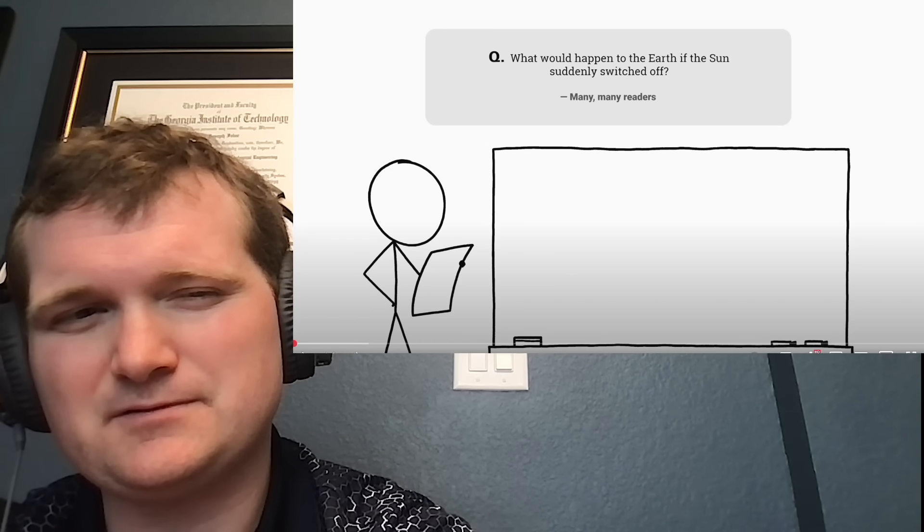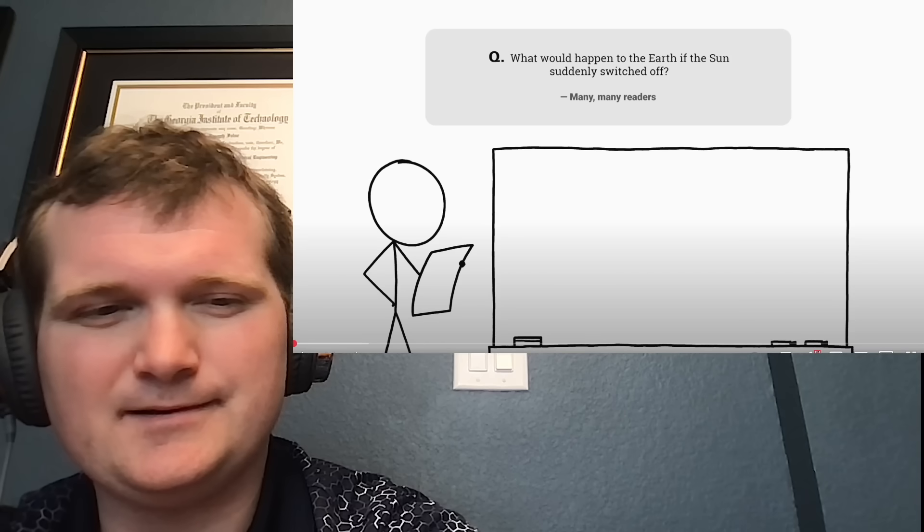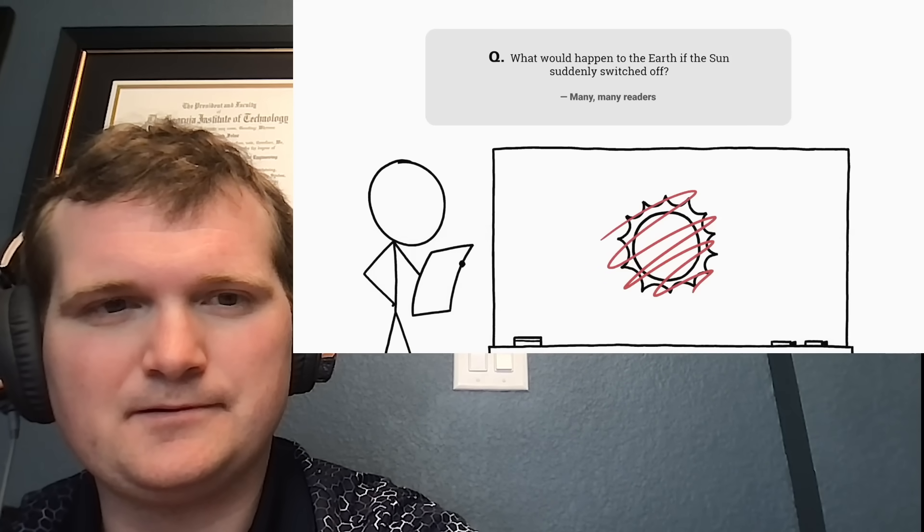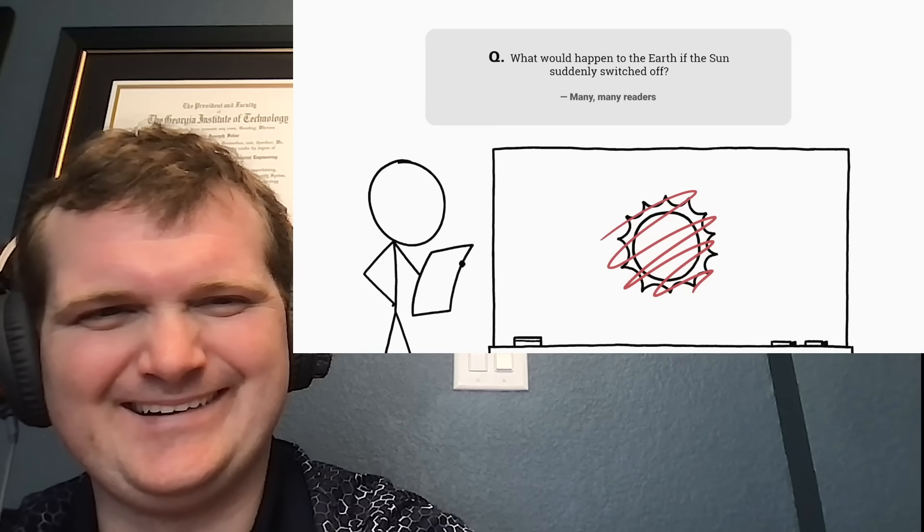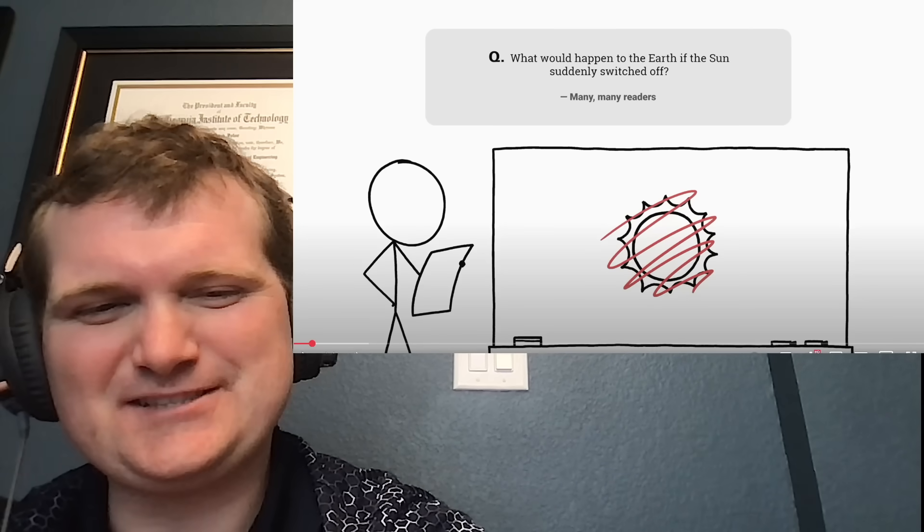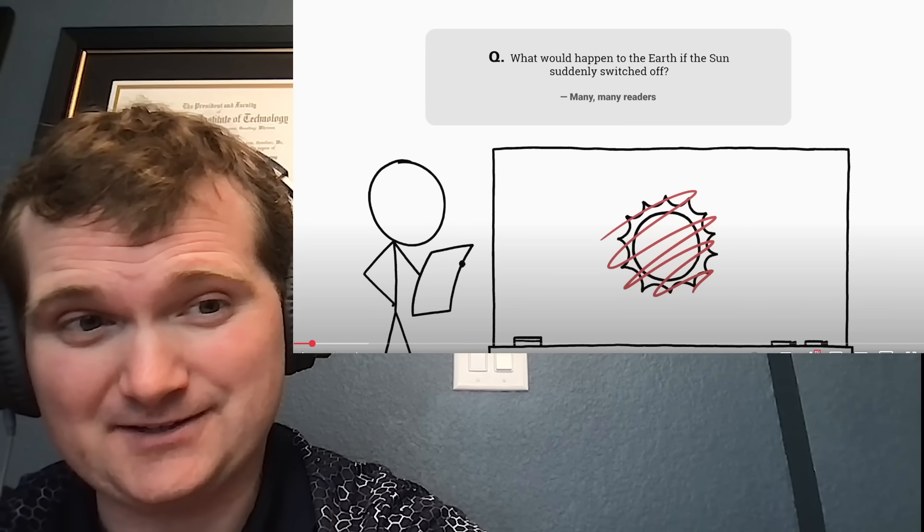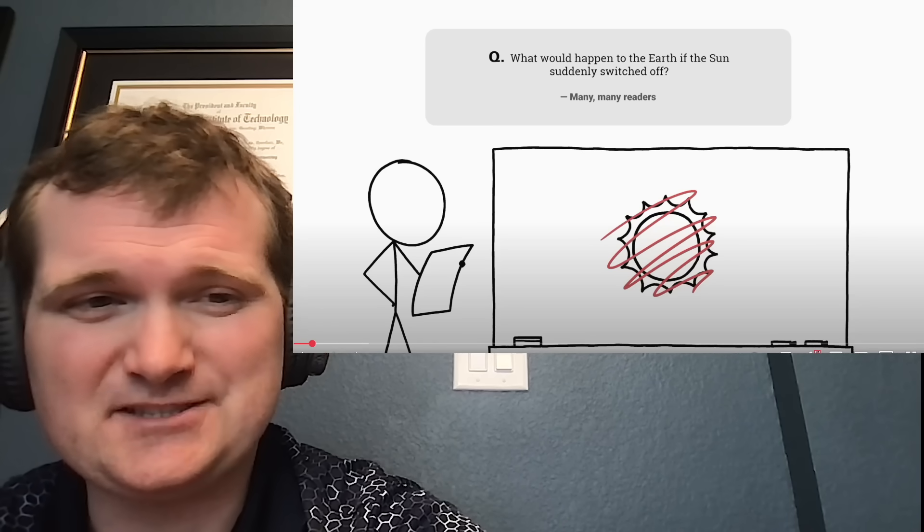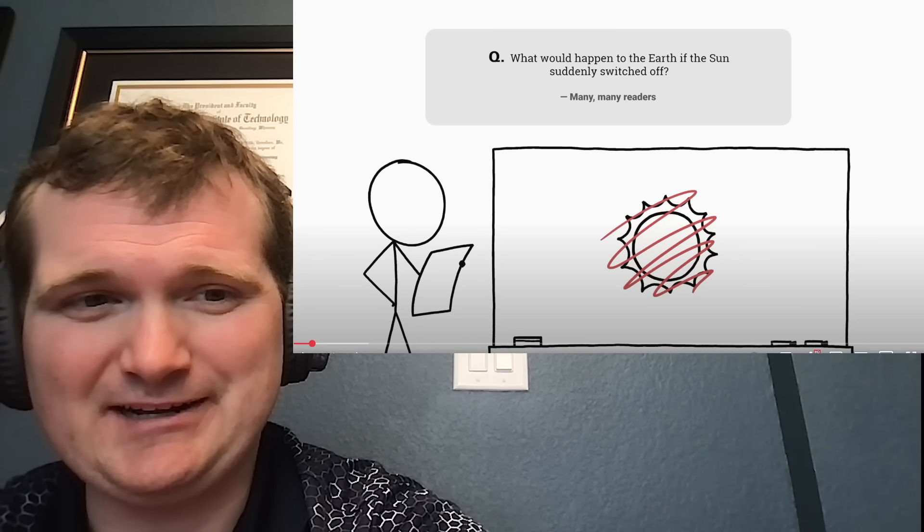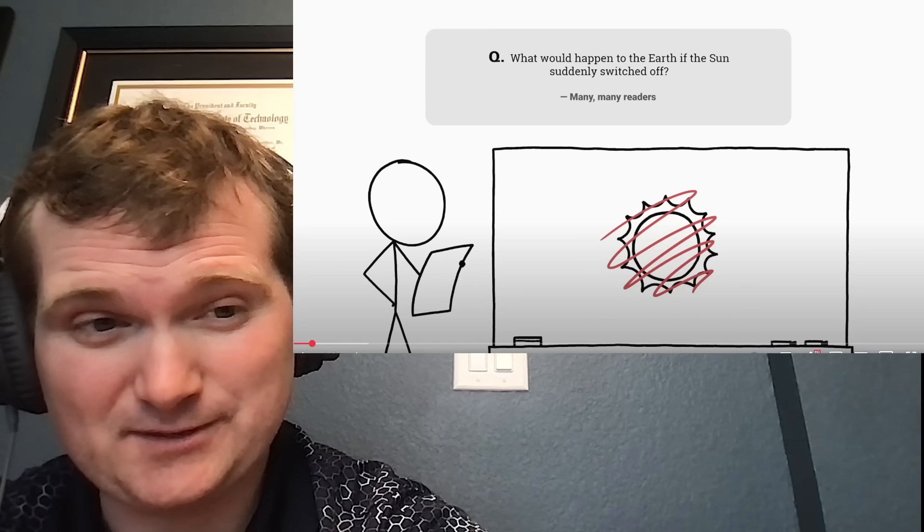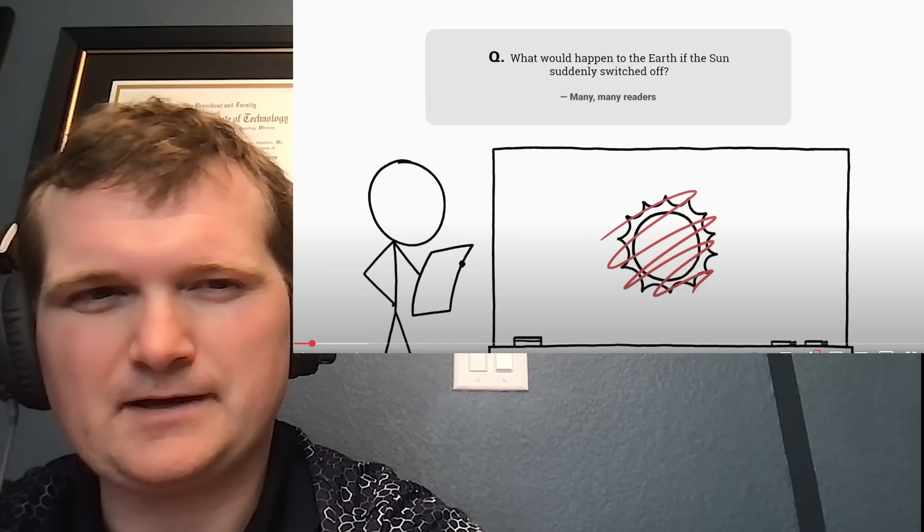Let's see what would happen to the earth if the sun suddenly switched off. This is probably the single most popular question submitted to 'what if,' and it's 'suddenly switched off.' So the sun is a nuclear reactor—it's a fusion reactor. We're talking what if somebody emergency shut down this reactor the same way a fission reactor trips, even though the sun is fusion. I guess this would involve a sudden removal of fuel.